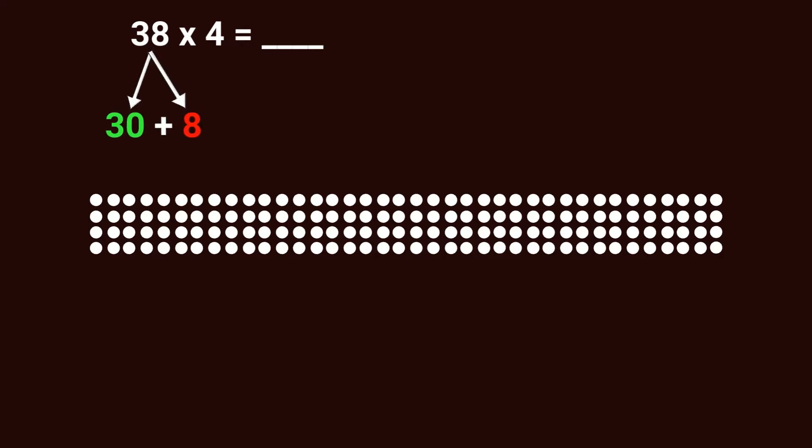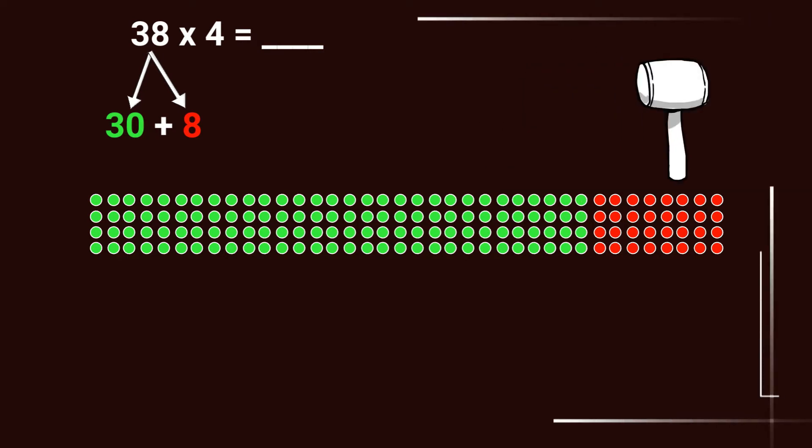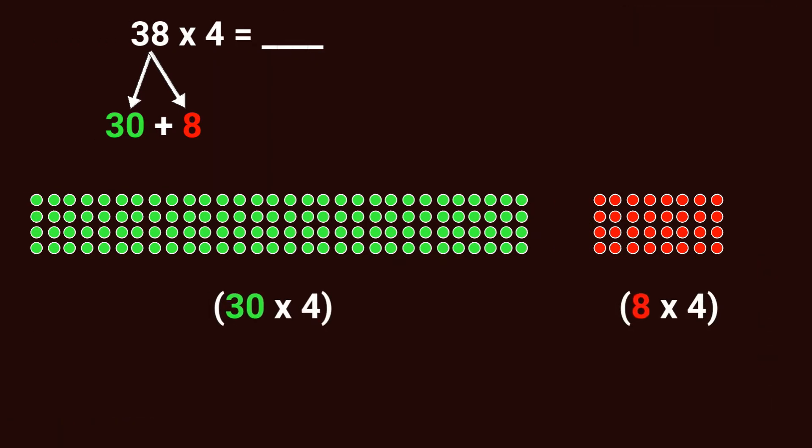We don't know our 38 facts — if it was 7 times 4 that would be easy, but 38 times 4 we don't know those basic facts. So what we're able to do with the distributive property is decompose that first factor into 30 groups and 8 groups. Here we have it color coded: we have 30 groups of 4 and 8 groups of 4. The distributive property allows us to split up the array, and you can see it split apart right there.